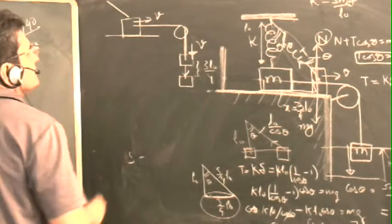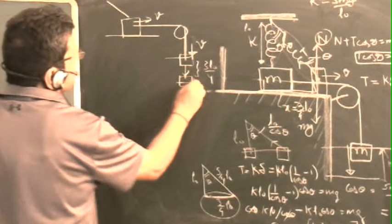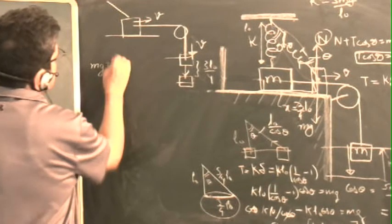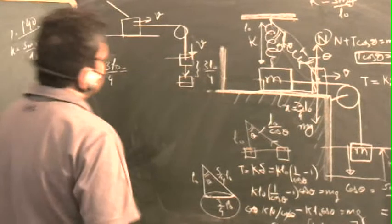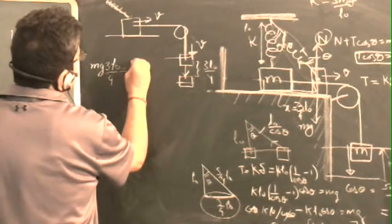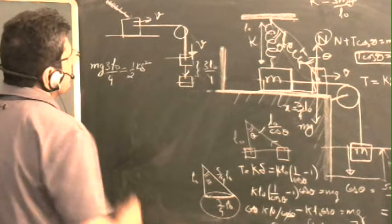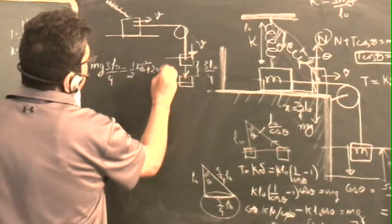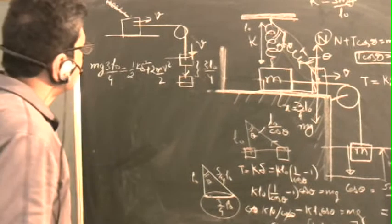See what is the energy relationship. Fall in potential energy is mgH, where H is 3L0 upon 4. This is equal to potential energy rise in spring, which is half K delta square, plus the kinetic energy of these two masses, which is twice MV square upon 2. From here we can find V square.